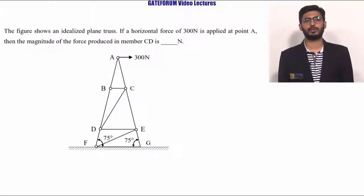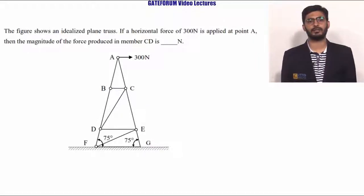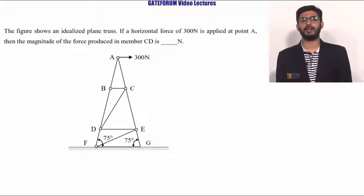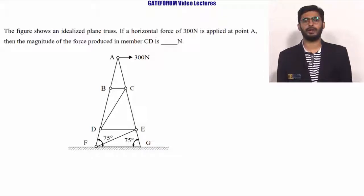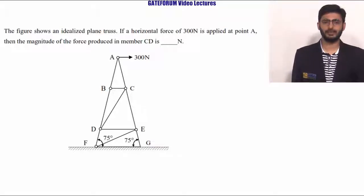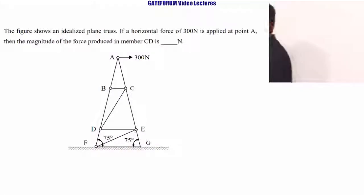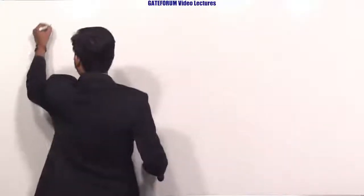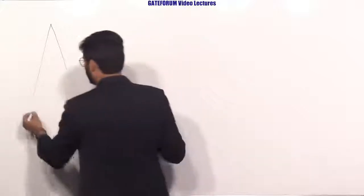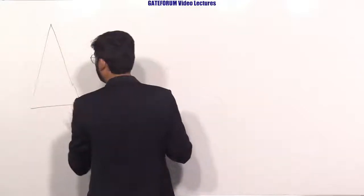This question belongs to the topic engineering mechanics, from the trusses topic. The figure shows an idealized plane truss. If a horizontal force of 300 Newtons is applied at point A, then the magnitude of the force produced in member CD is how many Newtons?